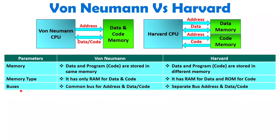When we talk about buses, with Von Neumann, you have common buses for address and data for both code and data access. With Harvard architecture, we have separate addressing — for data access the address is separate, and for code access the address is separate. So separate buses exist for address as well as data with Harvard architecture.